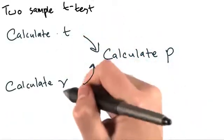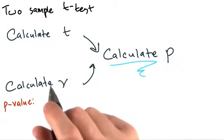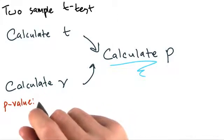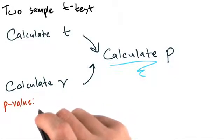All right, so once we have these two values, we can estimate the p-value. Conceptually, the p-value is the probability of obtaining a test statistic at least as extreme as the one that was actually observed, assuming that the null hypothesis was true.